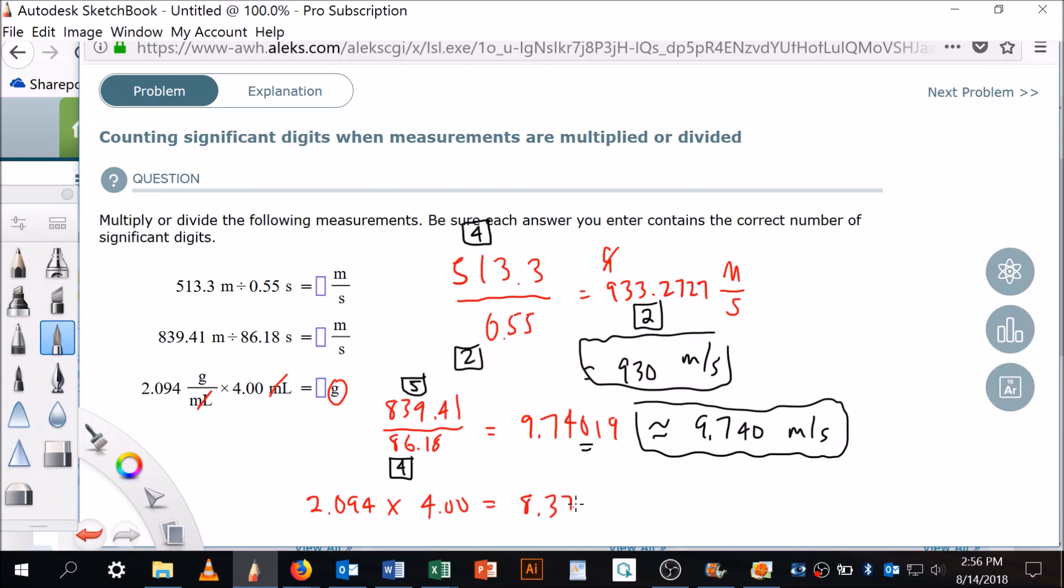8.376. I got to go back now and make notes to myself. This has four sig figs in it. This has three. So this can only have three in it. So this is going to be reported as 8.3... I'm going to round that one up because it's 6... 8.38 grams.